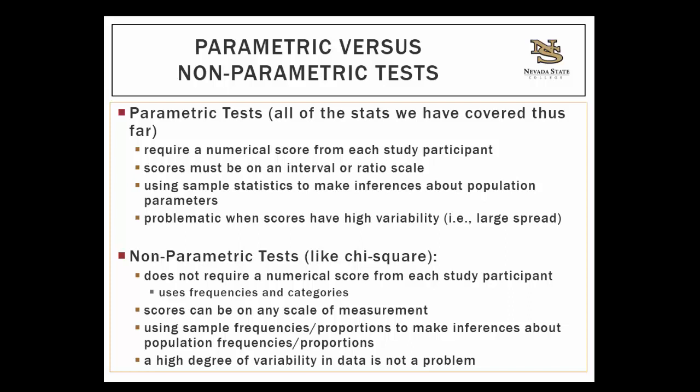Also, if you think about ANOVA, if you have a lot of within-groups variability — a lot of spread of scores within each group — then the denominator of your F statistic is going to be large, and the overall value for F will be smaller, and it won't be as easy to reject the null hypothesis and say that you do have a significant difference among your groups. So non-parametric tests like the chi-square statistic don't require a numerical score from each study participant.